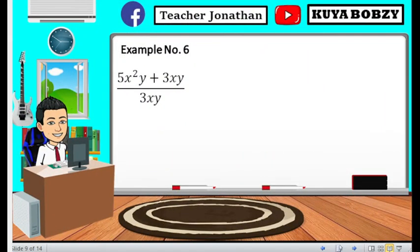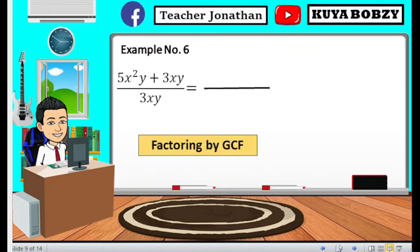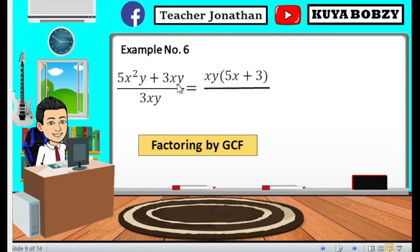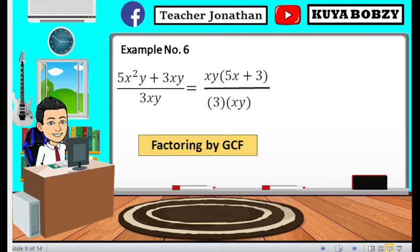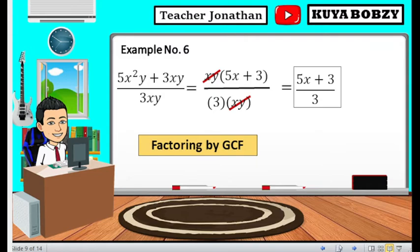Example number 6. We have 5x squared y plus 3xy all over 3xy. We can use factoring by GCF, and the GCF will be xy. Dividing 5x squared y by xy gives 5x, and dividing 3xy by xy gives positive 3. We can separate the factors 3 and xy in the denominator, then cancel out xy. The remaining answer is 5x plus 3 all over 3.